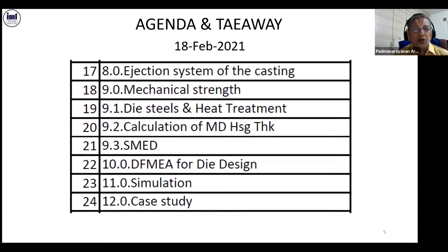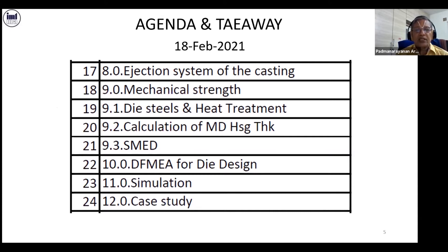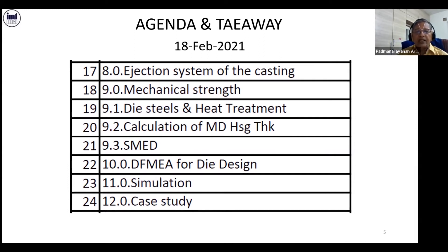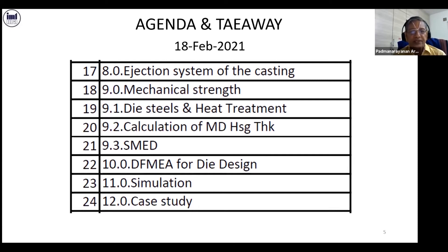The next day we will talk about the ejection system, because there are many problems when the ejection system is not designed properly, which eventually stalls the die during production and prevents it from running even a thousand or two thousand shots. Then a very important topic is mechanical strength, including die steels and heat treatment, plus some practical calculations — how to calculate moving die housing thickness.